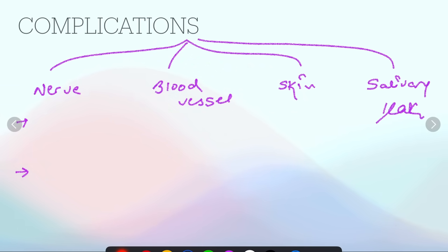Next, what will be the complications associated with parotidectomy? For nerve complications, there will be facial nerve paralysis or paresis, that is weakness or complete loss of the motor nerve. Another complication associated with nerve can be Frey's syndrome.